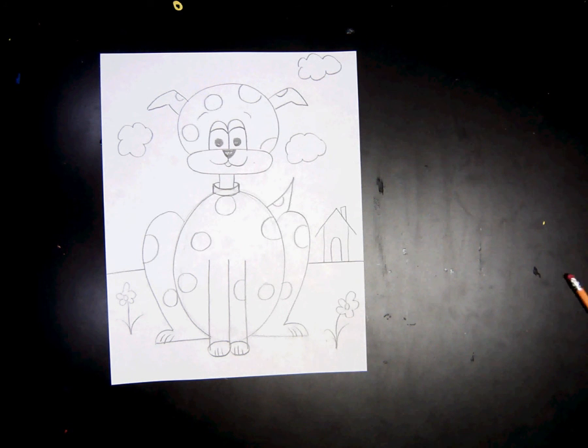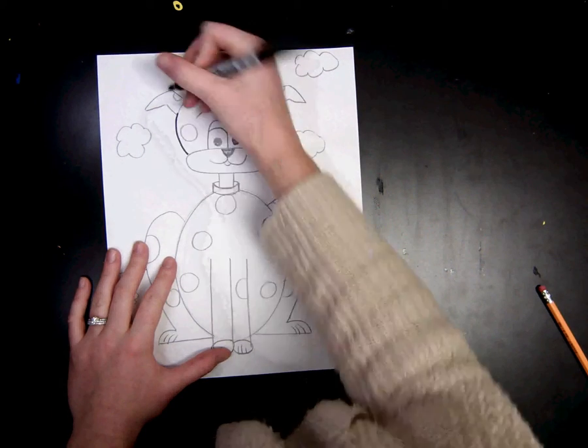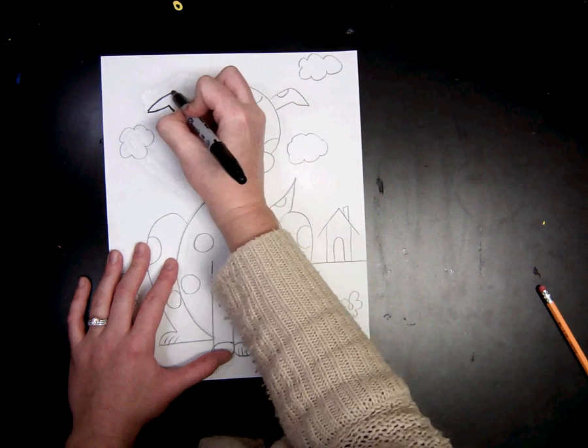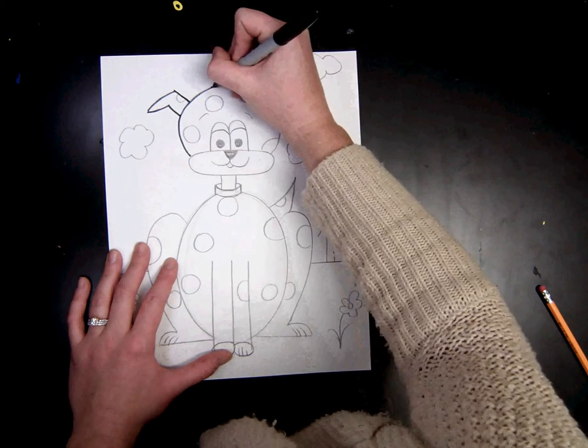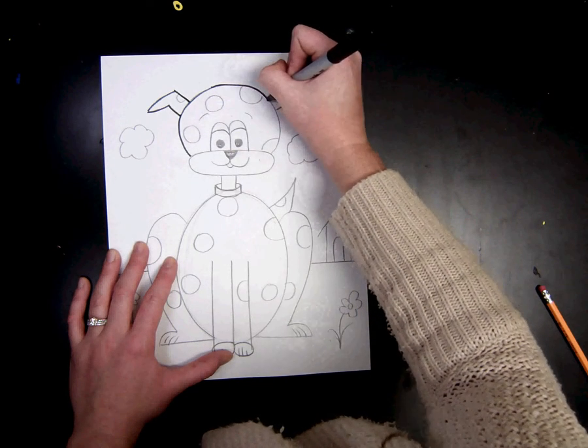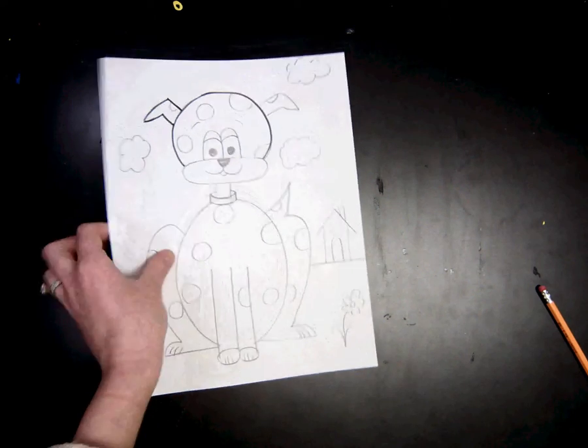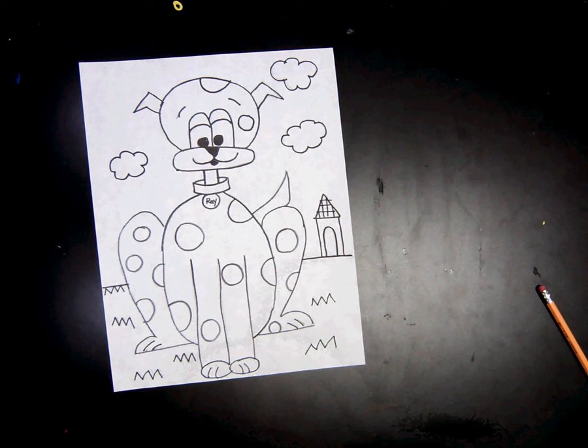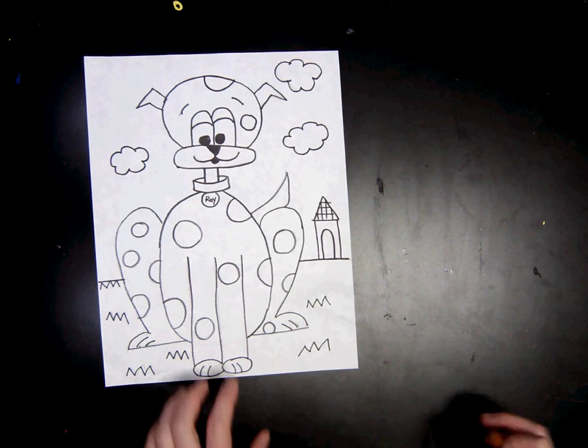Once you are done with the pencil, you're going to go in and trace all your details with Sharpie. You're going to do this until your dog, all the pencil lines, have Sharpie. Then if you have time you can go in and add color to your dog.